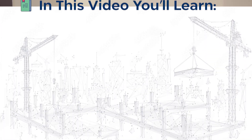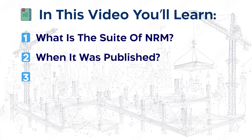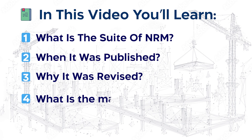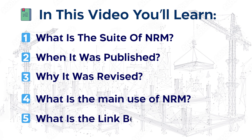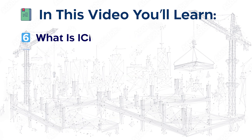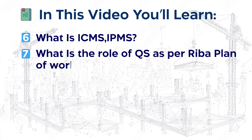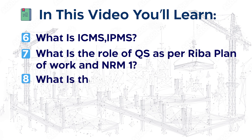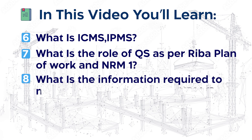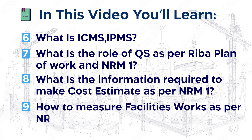In this video we are going to talk about: what is the suite of NRM, when it was published, why it was revised, what is the main use of NRM, what is the link between ICMS and NRM, what is ICMS, what is IPMS, what is the role of QS as per RIBA plan of work and NRM1, what information is required to make a cost estimate as per NRM1, and finally the measurement rule for facilitation work.